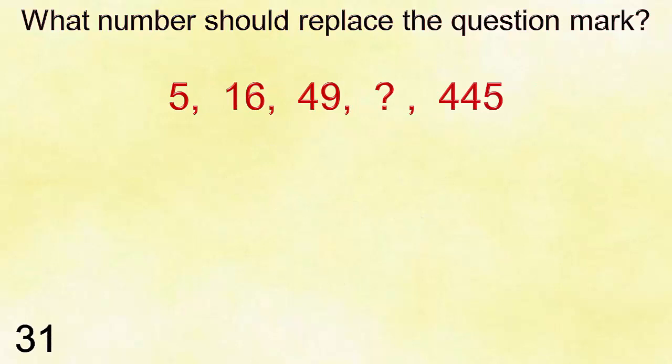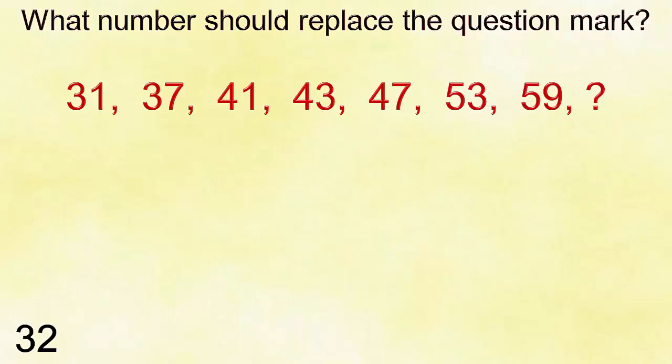Answer is forty-one. Number thirty-one: five, sixteen, forty-nine, question mark, four hundred forty-five. Answer is one hundred forty-eight. Number thirty-two: thirty-one, thirty-seven, forty-one, forty-three, forty-seven, fifty-three, fifty-nine.